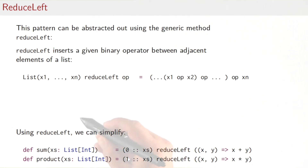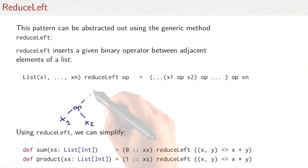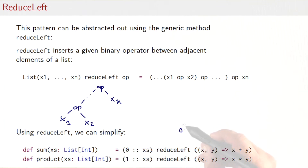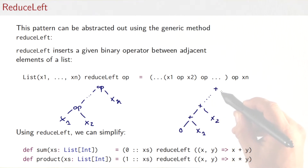If we draw that as a tree it would look like this. We have a list x1, x2, and so on, until the last operation takes the last element of the list. Once we have reduceLeft we can express sum and product with it. Sum would take the list starting with a zero, followed by xs, and reduceLeft with the plus operation — giving us zero plus x1 plus x2 and so on up to xn.